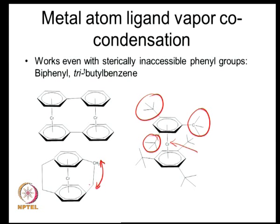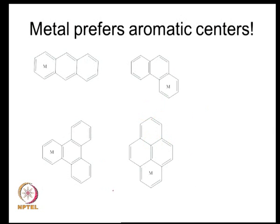Much of this work was done by one of the students of Fischer — Elschenbroich — who worked in Marburg and was responsible for making a large number of metal sandwich complexes using the co-condensation technique.